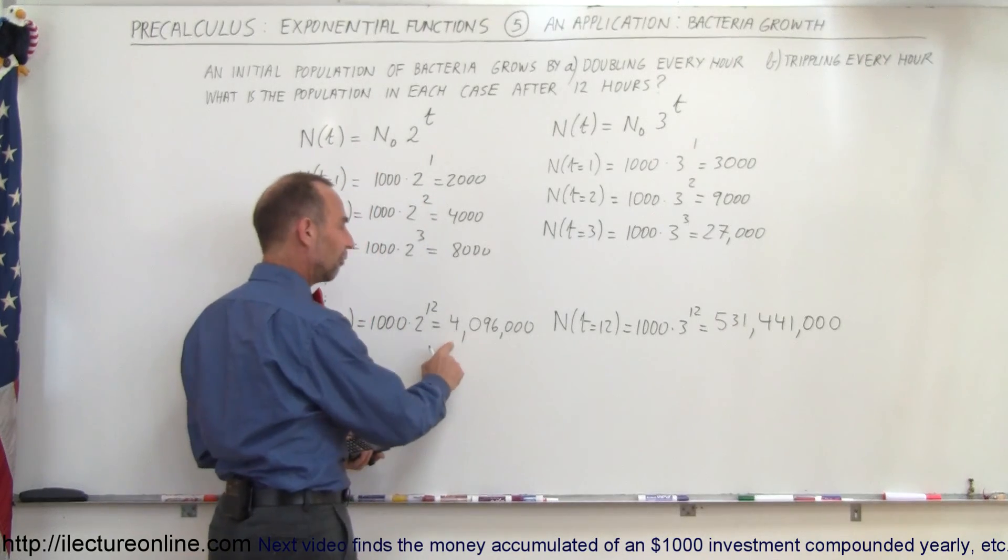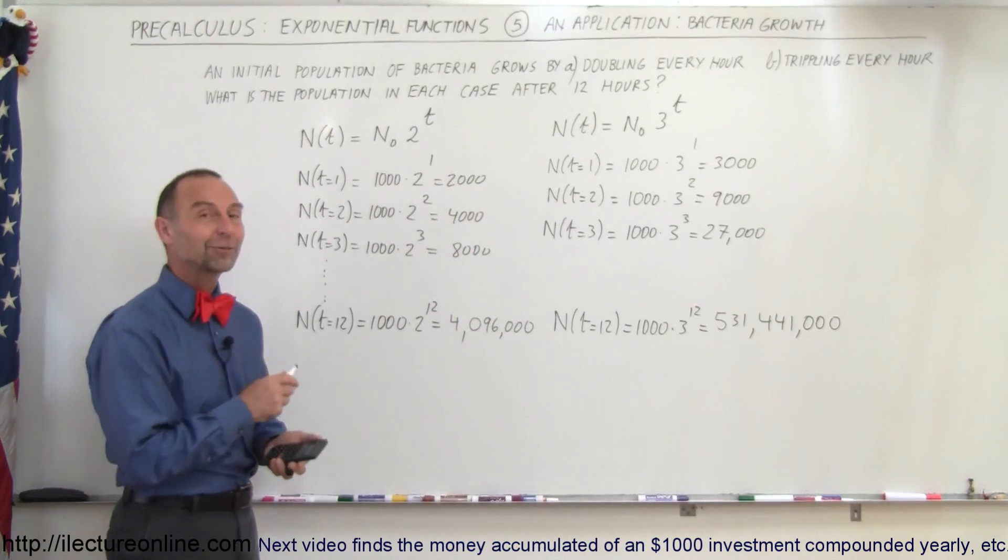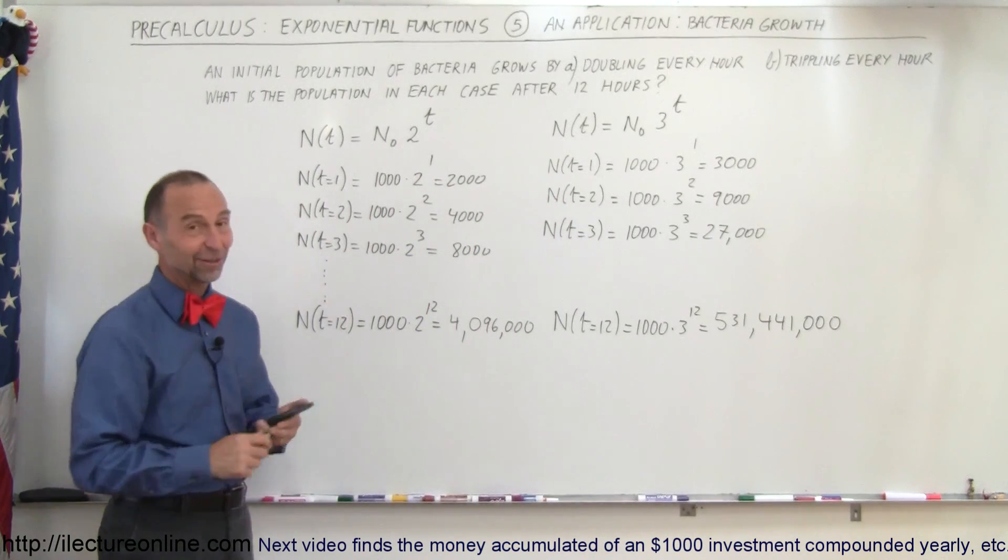That would be the population after 12 hours if it triples every hour versus doubling every hour. Notice a huge difference: 4 million versus 531 million. That's the power of exponential functions.